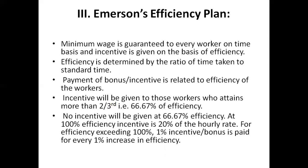In the Emerson plan, the efficiency level of the worker is raised. Those who perform more than two-thirds of the efficiency will be paid an incentive. If they are performing below two-thirds, they will not be paid any incentive. That is the basis of the Emerson Efficiency Plan — workers performing below two-thirds of the standard time will not be paid any incentive, and those performing above two-thirds will be given incentive accordingly.